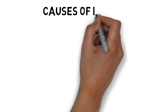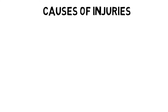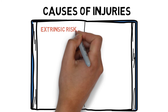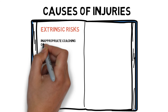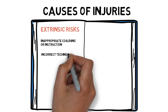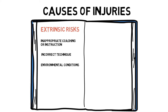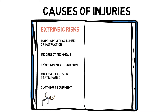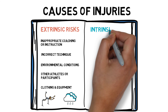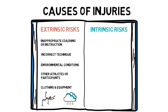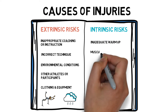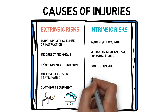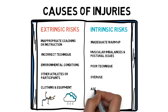Injuries can be caused by a wide range of factors, split into two main categories. Extrinsic risks look at factors external to the body, such as inappropriate coaching or instruction, incorrect technique, environmental conditions, other athletes or participants, and clothing and equipment. Intrinsic risks look at the physical aspects of the individual body, such as an inadequate warm-up, muscular imbalances and postural issues, poor technique, overuse, and age.